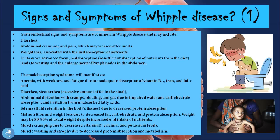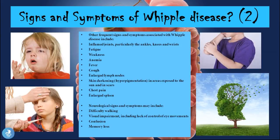Those are the gastrointestinal signs and symptoms. Other frequent signs and symptoms associated with Whipple disease include inflamed joints, particularly the ankles, knees, and wrists, fatigue, weakness, anemia, fever, cough, enlarged lymph nodes, skin darkening called hyperpigmentation in areas exposed to the sun and in scars, chest pain, and an enlarged spleen.